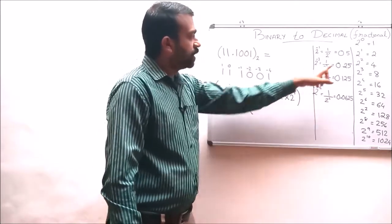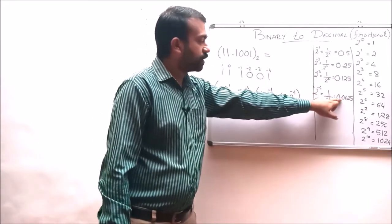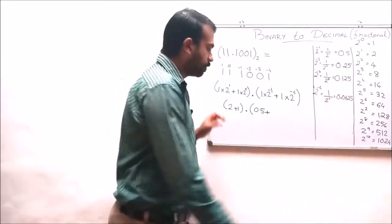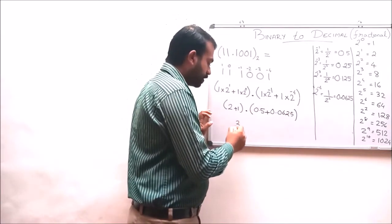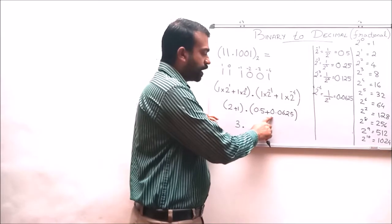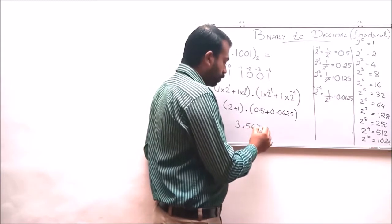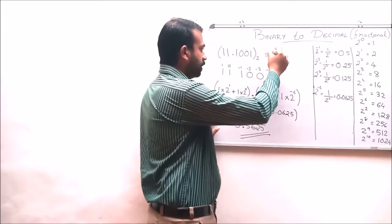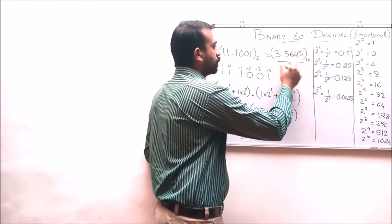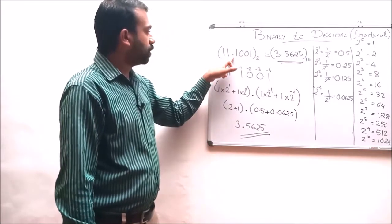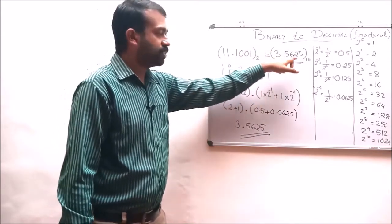2 raised to minus 1 is 0.5. So 0.5 plus 2 raised to minus 4 which is 0.0625. While adding we get 2 plus 1 is 3. 0.5 plus 0.0625 results in 0.5625. So the final answer is 3.5625 to the base 10. The binary number 11.1001 is equivalent to the decimal number 3.5625.